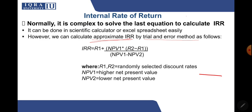Here is the approximation formula, where R1 and R2 are randomly selected discount rates. You select two different interest rates and calculate the NPV values at those rates — NPV1 at one rate and NPV2 at the other. NPV1 should be the higher net present value and NPV2 should be the lower net present value.